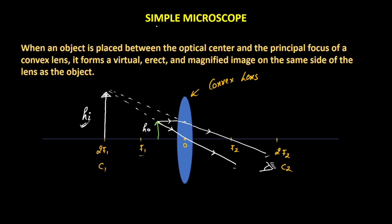And this is exactly what a simple microscope is. So when an object is placed between the optical center and the principal focus of the convex lens, it forms a virtual, erect, and magnified image on the same side of the lens as the object.